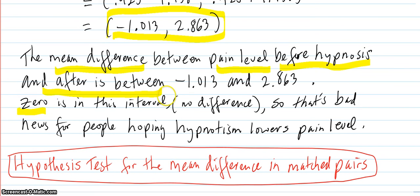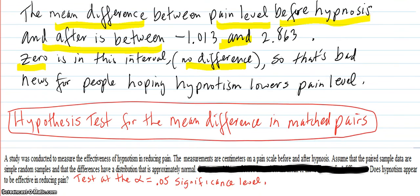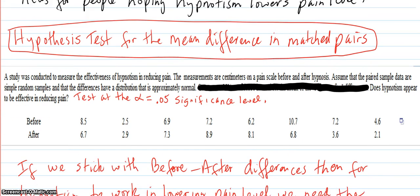Zero's in that interval, it's in between here. And zero difference is no difference. So that's bad news for people hoping hypnotism lowers pain level, because it looks like zero's right in that interval. But we're going to do a hypothesis test to be sure about that.